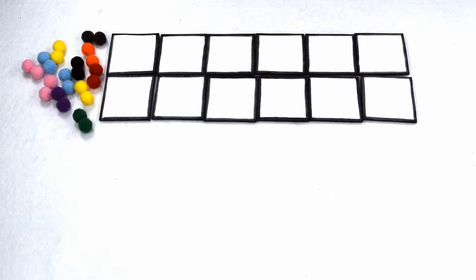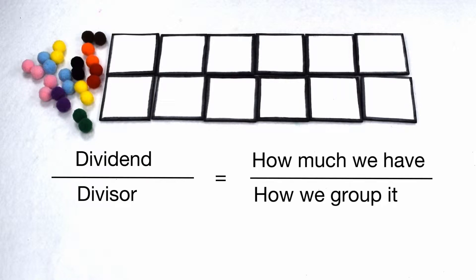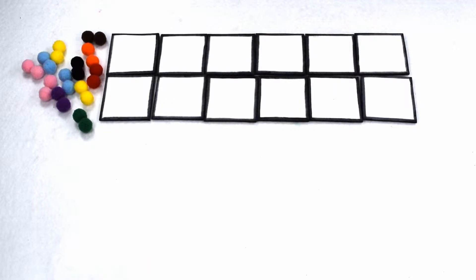In a division problem, the dividend tells us how much we have, and the divisor tells us how we group it. How can we determine which numbers can be divided by 12 without any remainders?